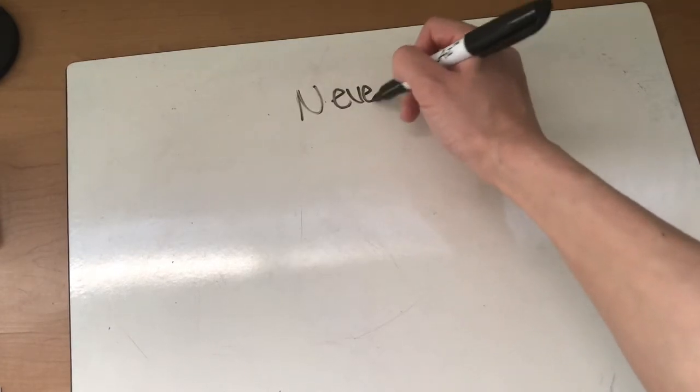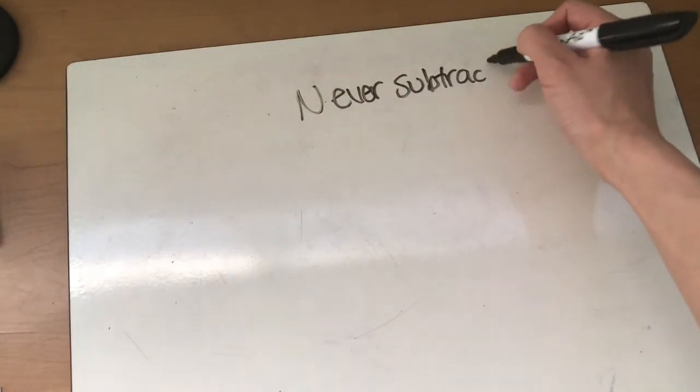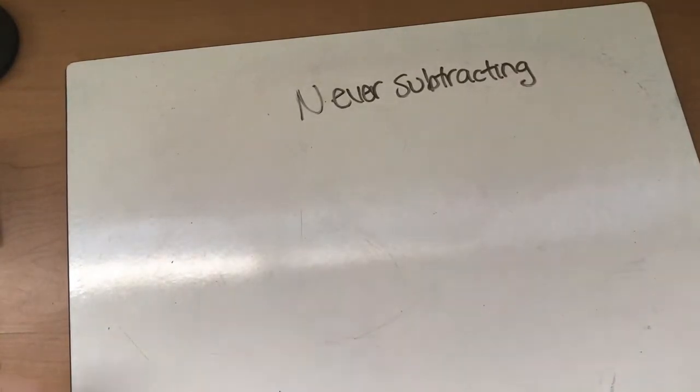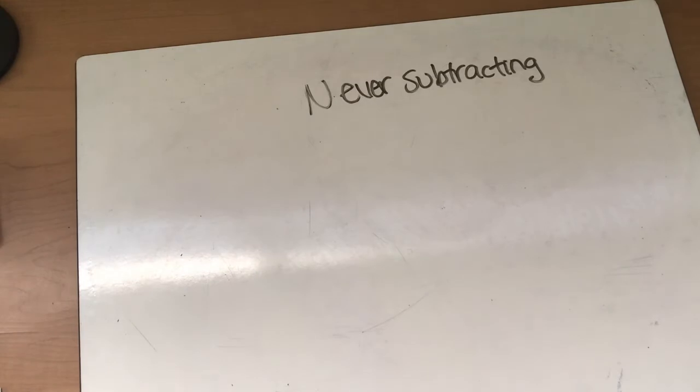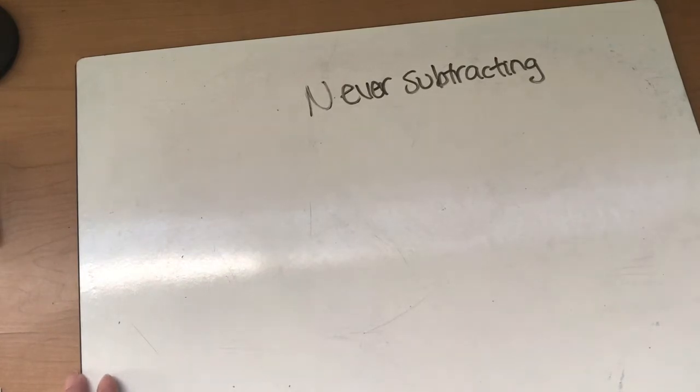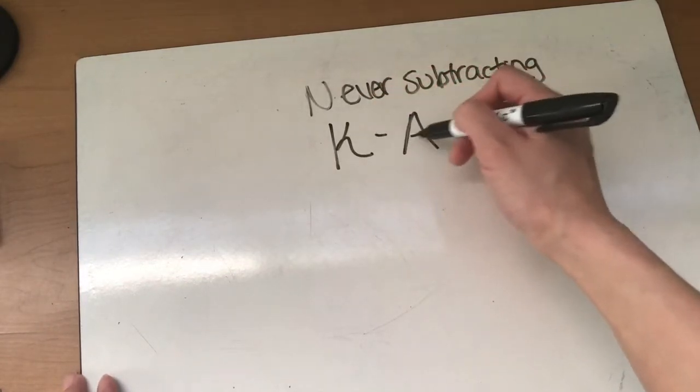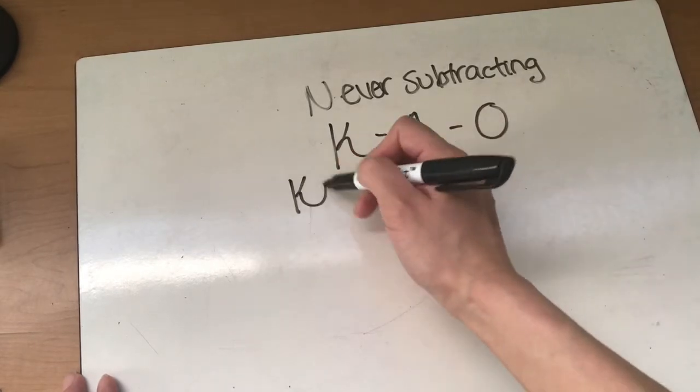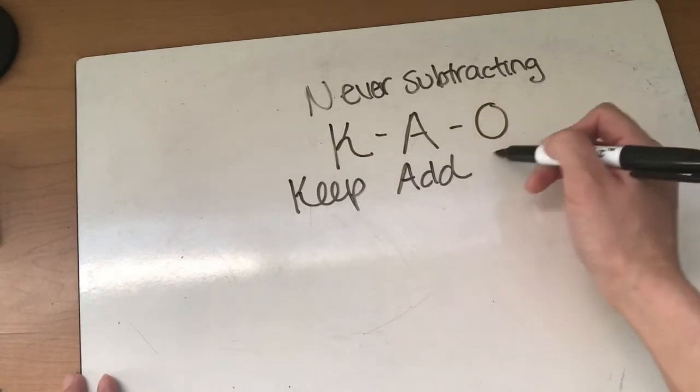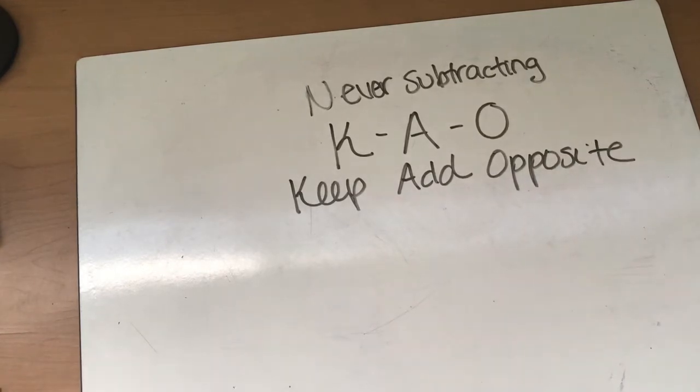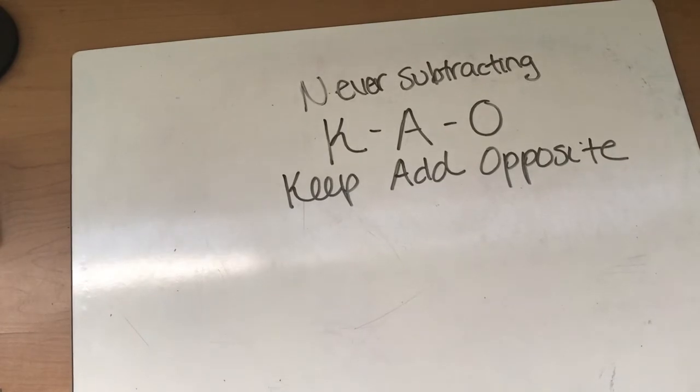Today is all about subtracting integers and actually the big secret and what I tell my students when we are subtracting integers is you are never subtracting. And when I tell my students this they're like what? Crazy! Actually I tell them the magic, the secret sauce in subtracting integers is three letters: K-A-O. And it stands for Keep Add Opposite because I tell my students you're never subtracting. You are always adding the opposite.